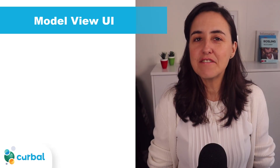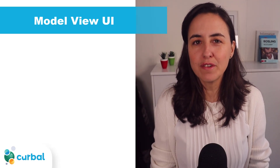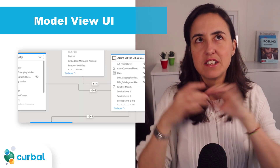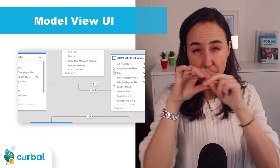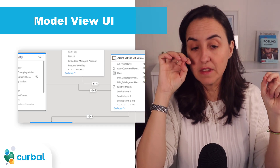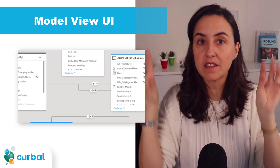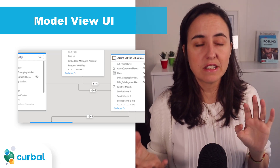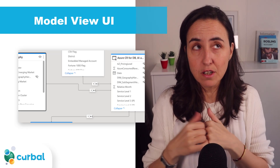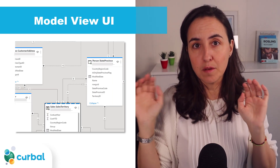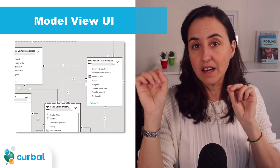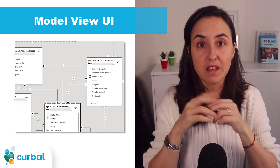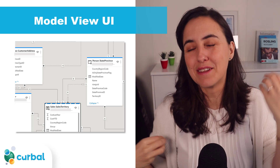They've made some updates to the model user interface. In February they changed the way relationship arrows looked, but got feedback that it wasn't great with many tables, so they changed it back to the original. They have now added a background to the cardinality icons — the one-to-many or many-to-many symbols — so you can see them better, though they remain in the same position as before.